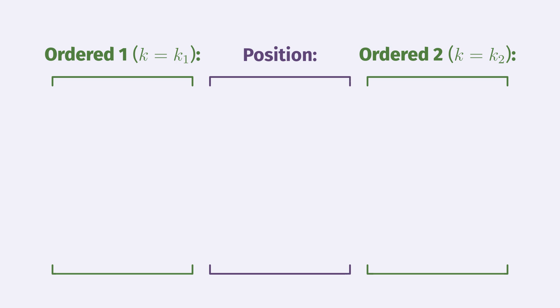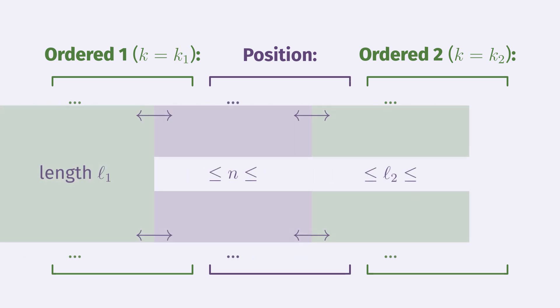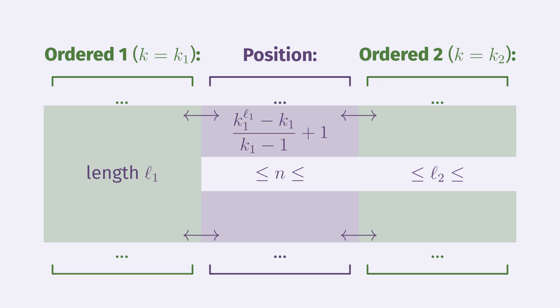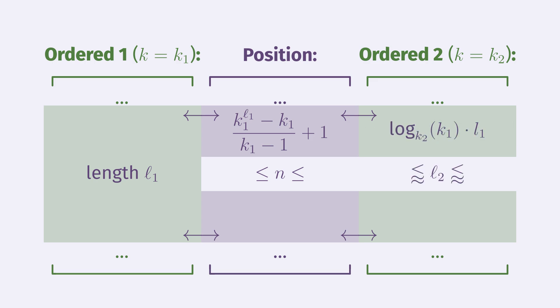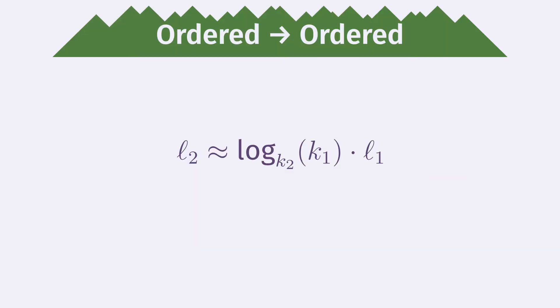We can now translate from ordered language 1 to ordered language 2, with K1 and K2 effective phonemes respectively. For an utterance in language 1 of length L1, its position N has lower bound (K1^L1 − K1) / (K1−1) + 1. This position corresponds to an utterance in language 2 with length L2. Removing negligible terms and simplifying, the lower bound for L2 is approximately log base K2 of K1 times L1, and the upper bound is approximately log base K2 of K1 times L1 plus 1. This means the length of text in two ordered languages is approximately linearly proportional, with the ratio being around log_{K2}(K1).